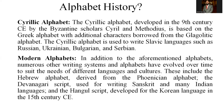The Cyrillic alphabet was developed in the 9th century by the Byzantine scholars Cyril and Methodius. It is based on the Greek alphabet and, apart from the Glagolitic alphabet, is used to write Slavic languages such as Russian, Ukrainian, Bulgarian, and Serbian.